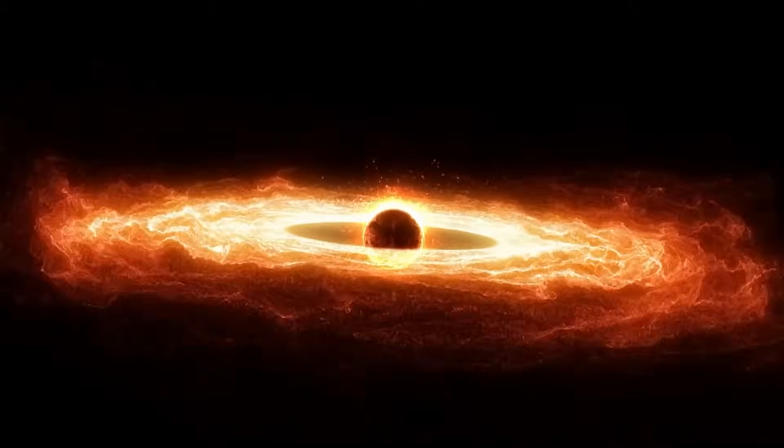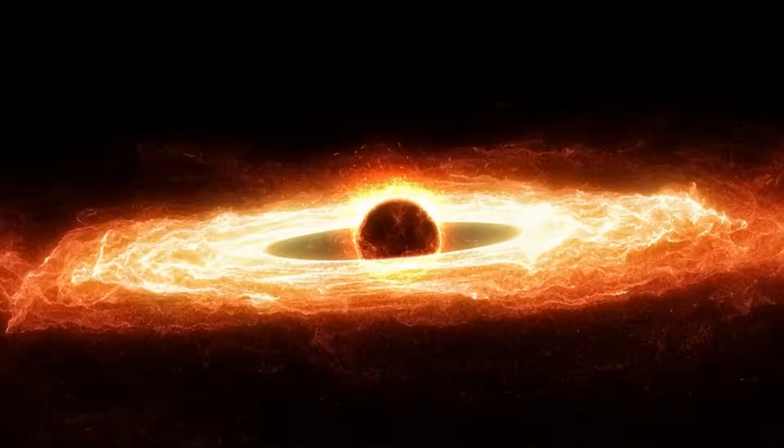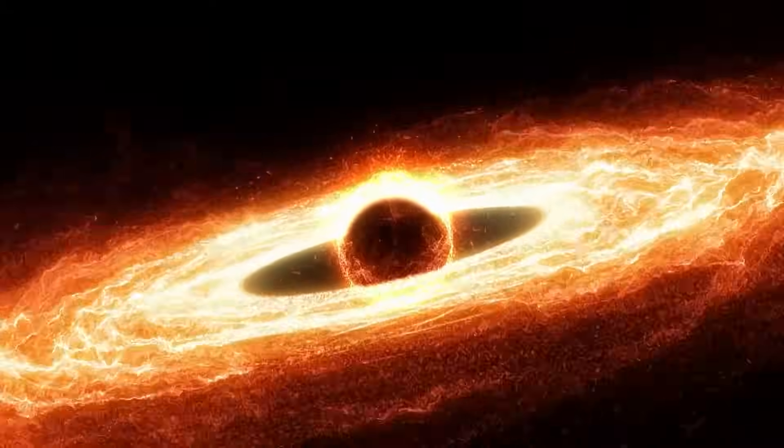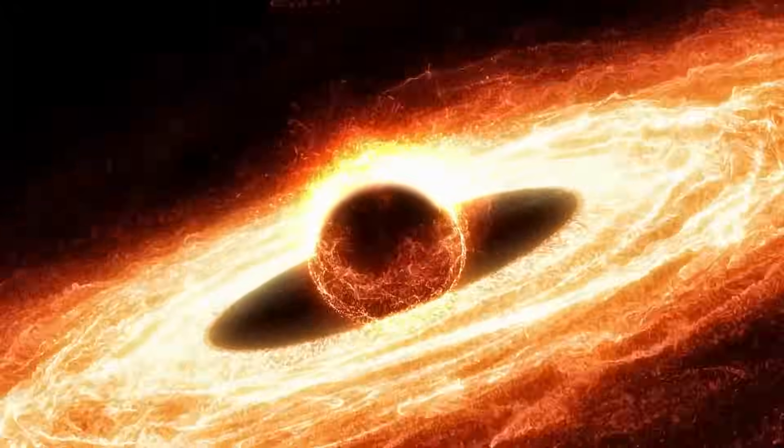To keep this spinning gas from flying apart, there had to be an enormous mass concentrated at the center, weighing as much as 2 to 3 billion suns. Such an incredibly massive object would trap light, and that's why it is called a black hole.